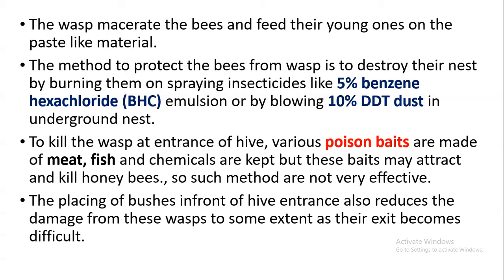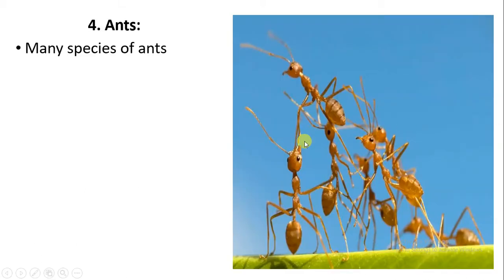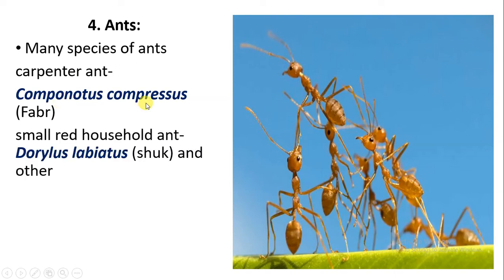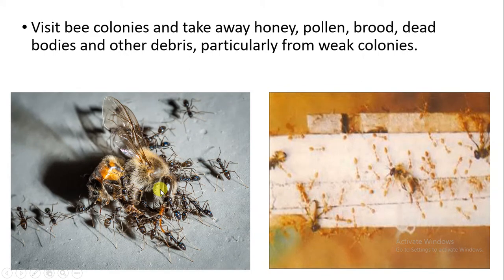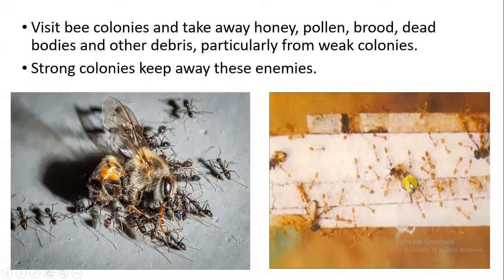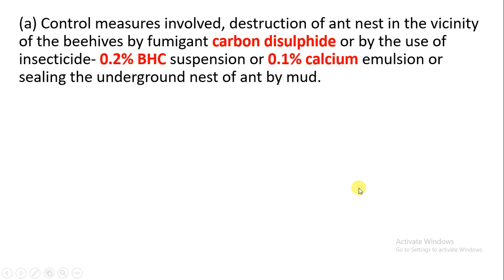Keeping some bushes behind the beehive is also a method to protect against wasps. The next enemy is the ant. There are a number of ant species, such as the black ant, carpenter ant (Camponotus compressus), red ant (Dorylus labiatus), Monomorium indicum, and Monomorium destructor — all of which can attack honeybees. Ants visit the bee colony and eat honey, pollen, brood, dead bodies, and other debris. Weak colonies are particularly vulnerable to ant attacks, while strong colonies keep these enemies away.